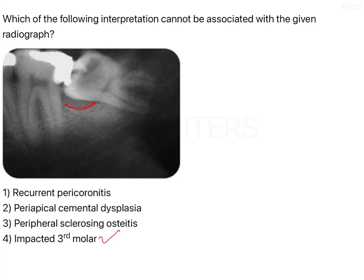Food lodgment occurs because there is a pericoronal flap — the normal oral mucosa present around a partially erupted, partially impacted third molar allows food to get easily lodged in that region. Because of difficulty in cleaning, the soft tissues around the third molar become inflamed and edematous, covering the tooth. This leads to impingement between the upper and lower teeth during occlusion, causing continuous irritation.